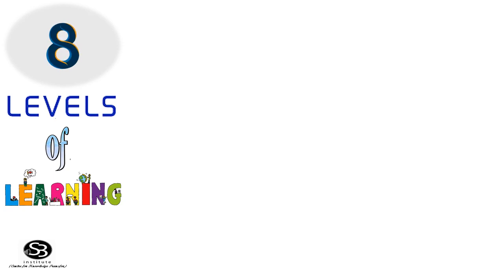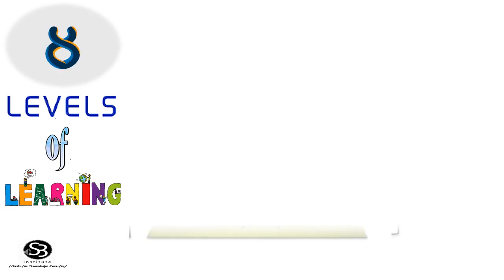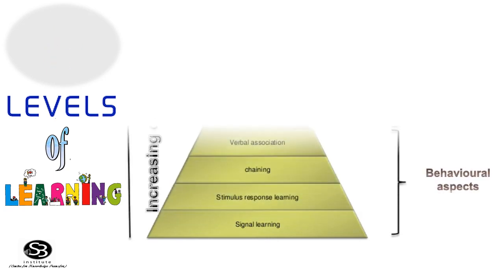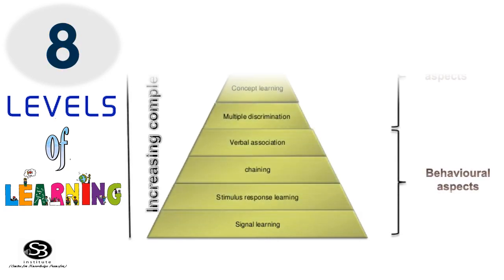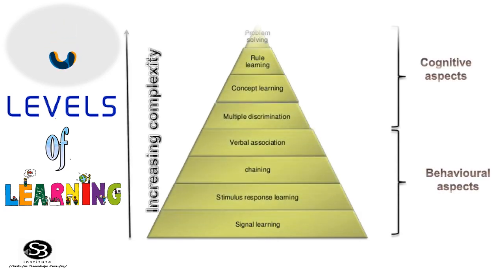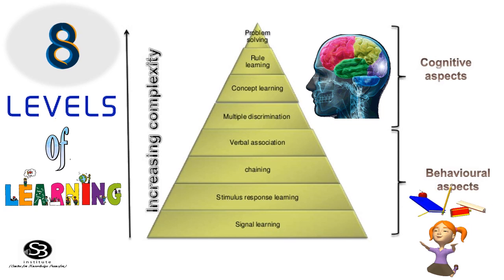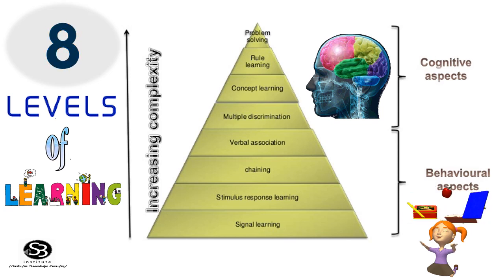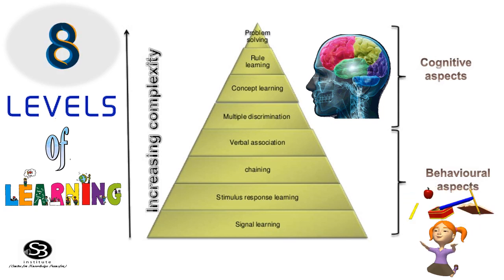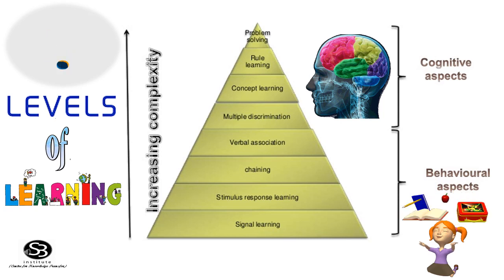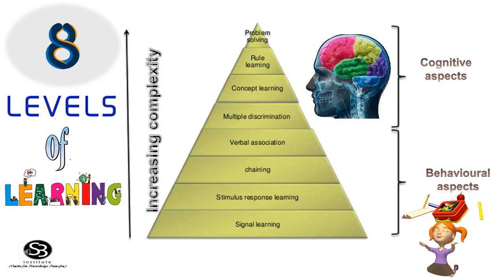Now let's discuss the 8 levels involved in learning. They are: Signal Learning, Stimulus-Response Learning, Chaining, Verbal Association, Multiple Discrimination, Concept Learning, Rule Learning, and finally, Problem Solving.